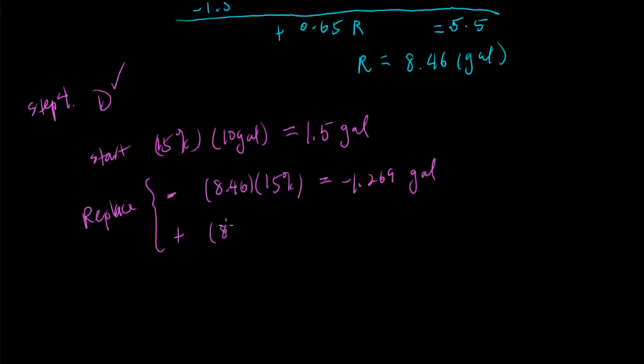Then we added 8.46 of 80% solution. And this one, again, if you run through your calculator, you'll get 6.768 gallons. If you do a bookkeeping here, add it all together, you will have 7 gallons. That's the end. When needed, the end is 7 gallons. And this checks out.